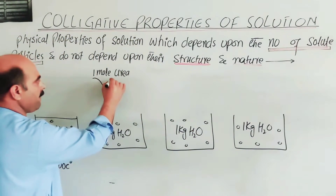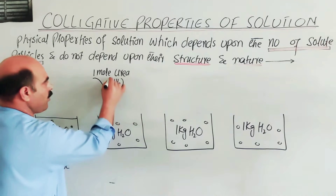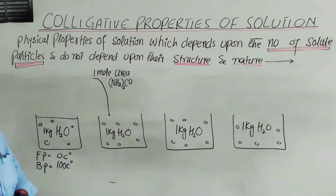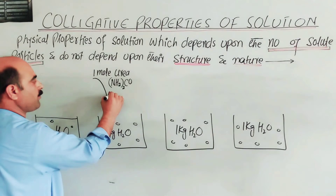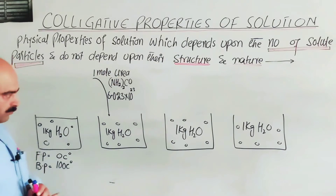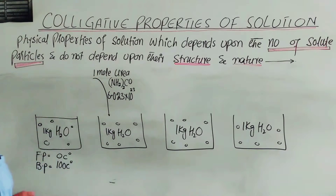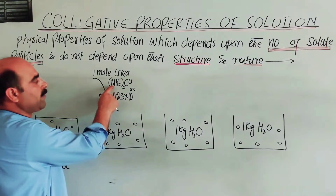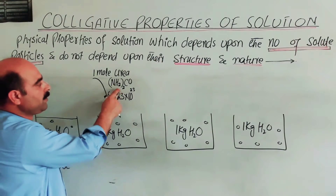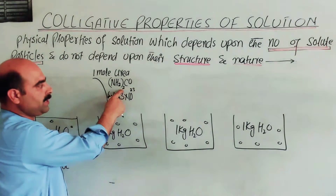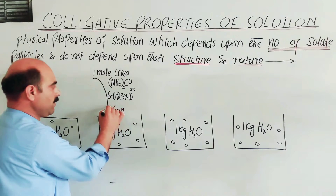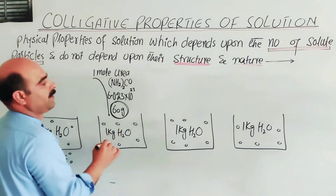The molecular mass of urea: nitrogen atomic mass is 14, there are 2 nitrogen atoms giving 28; hydrogen atomic mass is 1, there are 4 hydrogen atoms giving 4; carbon is 12; oxygen is 16. So the total is 28 + 4 + 12 + 16 = 60 grams. One mole of urea is 60 grams.